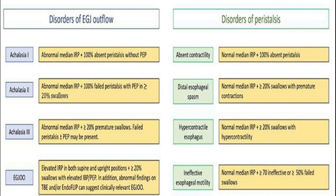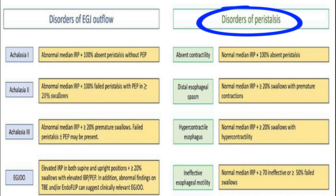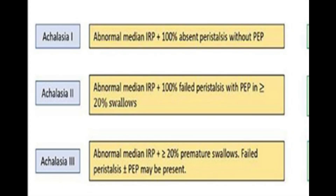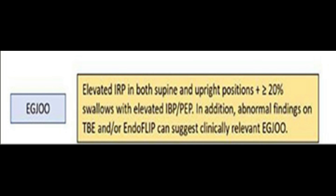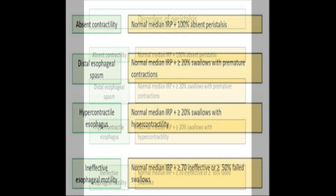Figure 1 demonstrates the Chicago Classification, showing how esophageal motility disorders are divided into two main categories: disorders of esophagogastric junction outflow or disorders of peristalsis. Within the first section, we have achalasia, which can be divided into three subtypes based on findings on high-resolution manometry, and a different subtype known as esophagogastric junction outlet obstruction. Within disorders of peristalsis, it can be further subdivided into hypomotile disorders and spastic disorders.